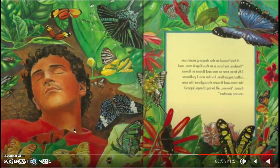A bee buzzed in the sleeping man's ear. Señor, my hive is in the kapok tree, and I fly from tree to tree and flower to flower collecting pollen. In this way, I pollinate the trees and flowers throughout the rainforest. You see, all living things depend on one another.